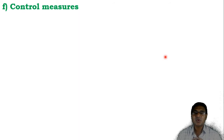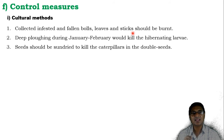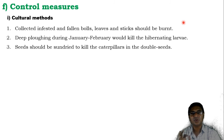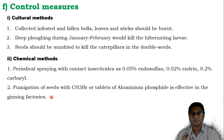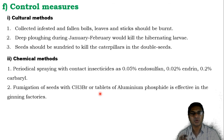For control using cultural methods: first, collected infested and fallen balls, leaves and sticks should be burned. Deep ploughing during January-February before sowing would kill the hibernating larvae. Seeds should be sun-dried to kill the caterpillars in the double seeds. For chemical methods, certain insecticides such as endosulfan, endrin or carbaryl can be used. Fumigation of seeds in ginning factories using CH3Br or tablets of aluminum phosphide are also effective to control the pest.